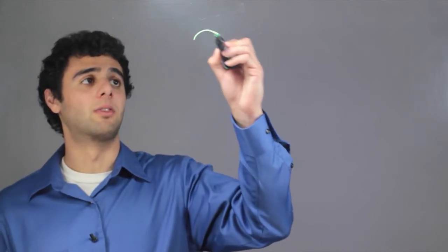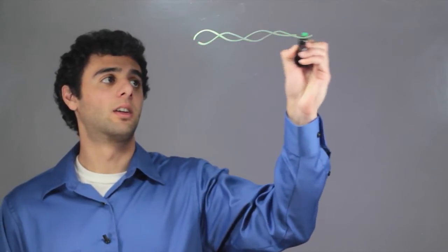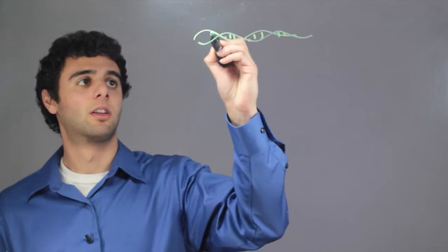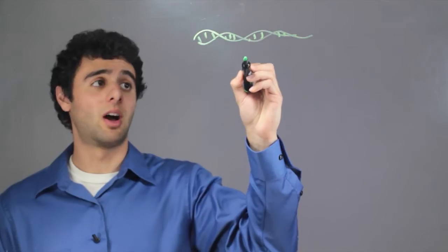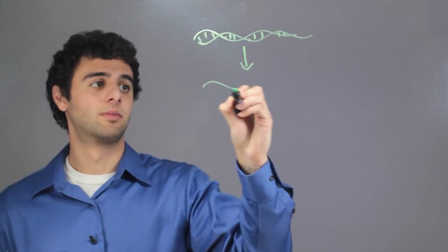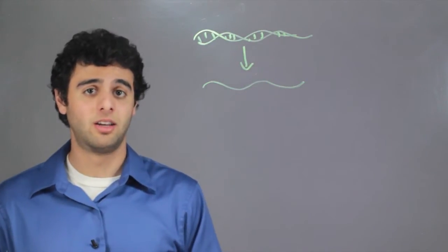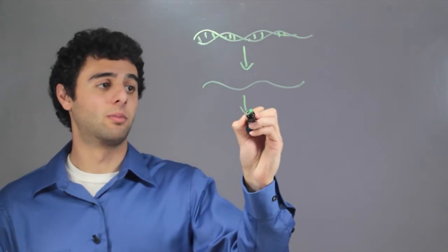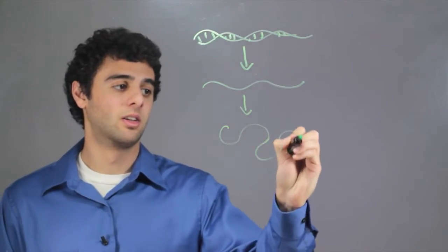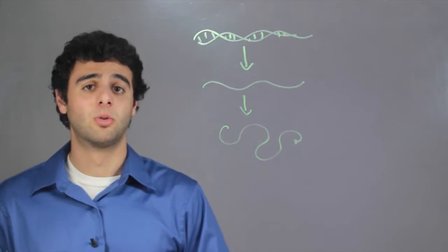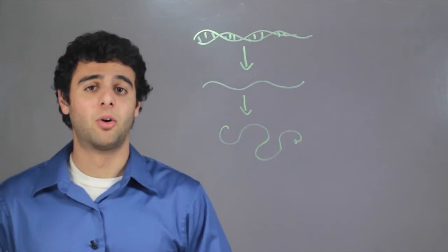Hi, I'm Michael Mehta and this is how a nucleotide sequence is copied from RNA to DNA. So normally we have DNA that is transcribed into mRNA, which can then be translated into the final product, which is a protein.